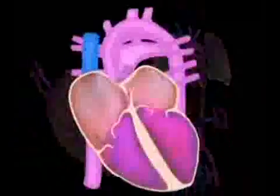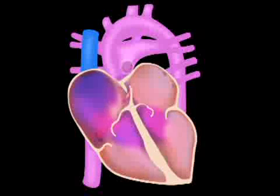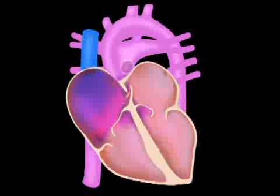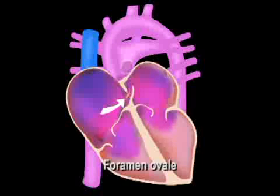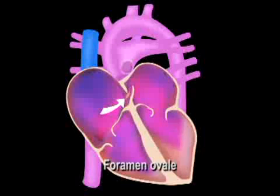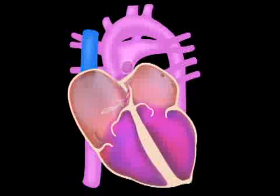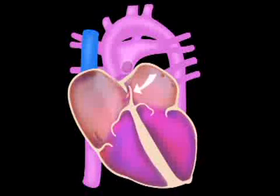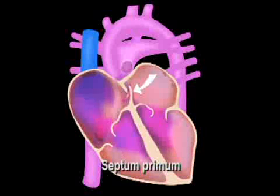Here, the circulation again deviates by shunting the blood directly to the left atrium through an opening in the septum called the foramen ovale. Backflow to the right atrium is prevented by a valve called the septum primum.